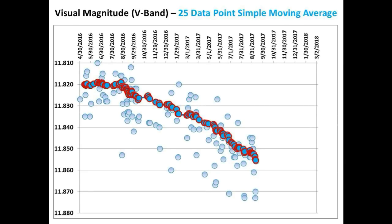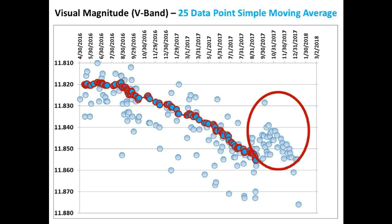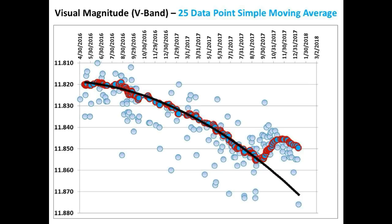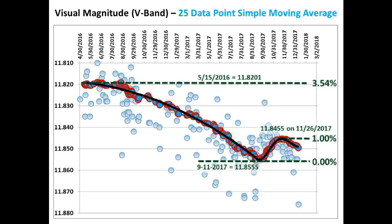On September 12th of 2017, we came to the conclusion that the flux of Tabby Star was starting to go off the rails with an unexpected brightening. The measurements circled in red showed a definite brightening of the star, and the resulting 25 data point simple moving average is shown here. It appears we took a detour from our accelerating long-term dimming curve, shown with the blue best fit curve. It is still to be seen if this is a temporary brightening. For the period shown, the star dimmed an average of 3.54% between May 2016 and September 2017 — 16 months — then abruptly brightened approximately 1% from September to November 2017, a total of 2 months. We are now headed down with a slope similar to that of the previous dimming curve.